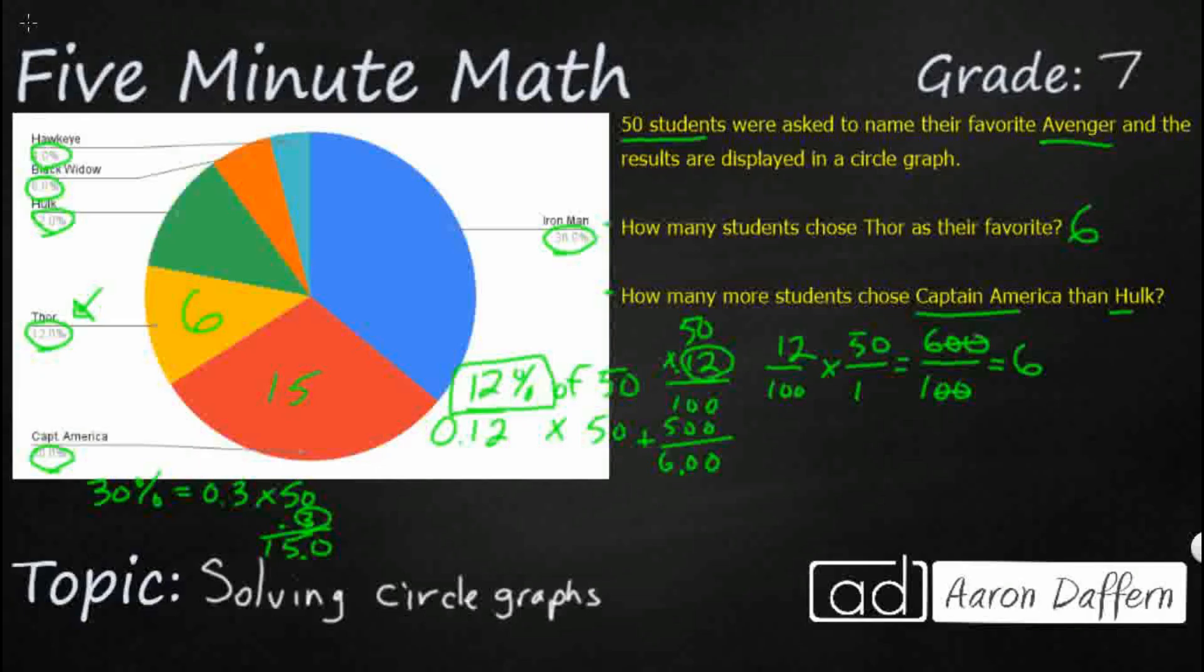Now we need Hulk 12%. Let's do that as fractions just to show you that you could do it either way. So that's going to be 12 over 100. Multiply that by 50 over 1. And you see that we are going to get our 600 over 100 because we already had that calculated, right? That was 6. Hulk is going to be 6% just like that Thor is 6%. So now we've got our 15 minus 6. And that's going to equal 9.